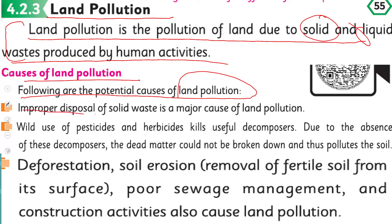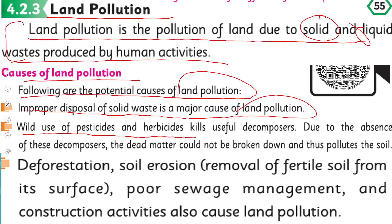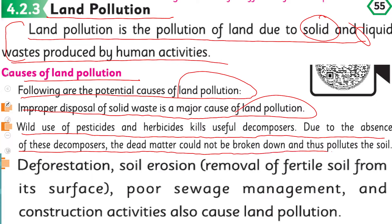Causes of land pollution — following are the potential causes of land pollution. Improper disposal of solid waste is a major cause of land pollution — jabke properly waste ko dispose of nahi kiya jata, it causes land pollution. While use of pesticides and herbicides kills useful decomposers.